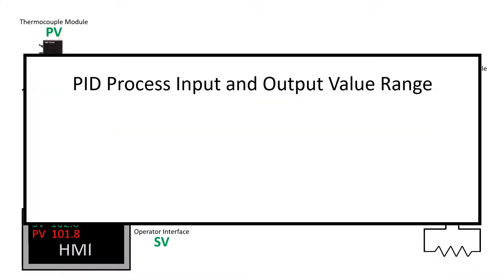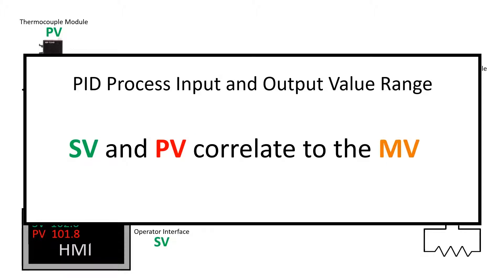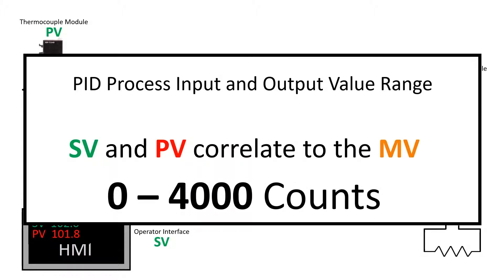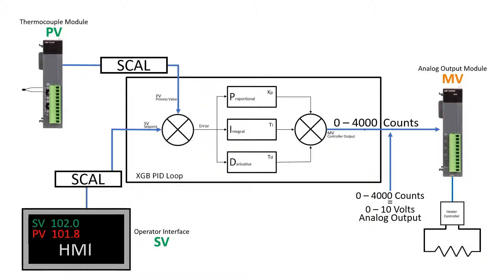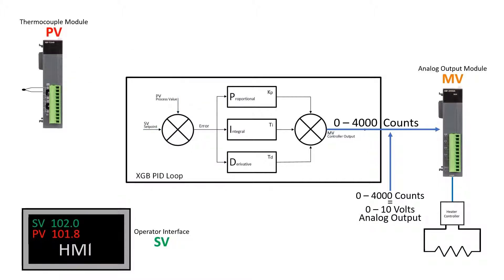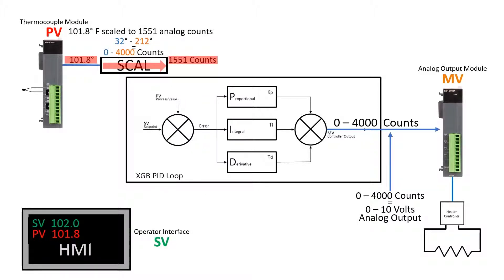The control loop requires process SV and PV input values that correlate to the MV output value — in this example, 0 to 4000. Our demonstration oven uses much lower temperatures than used in actual oven processes. The thermocouple module is scaled for a range of 32 to 212 degrees Fahrenheit spanning 0 to 4000 counts. A temperature value of 108 degrees is scaled to an analog count value of 1551, which is the value the PID will use for the PV.